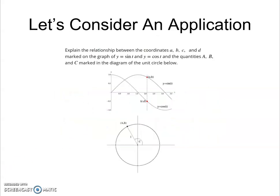Next what you would want students to do is to make their own connections between values that are on the xy axis for functions of sine and cosine and values that are on the unit circle. This really helps them to integrate the two together. So let's look at this one. Explain the relationship between the coordinates a b c and d marked on the graph y equals sine of t and y equals cosine of t and the quantities a b and c marked in the diagram of the unit circle below.